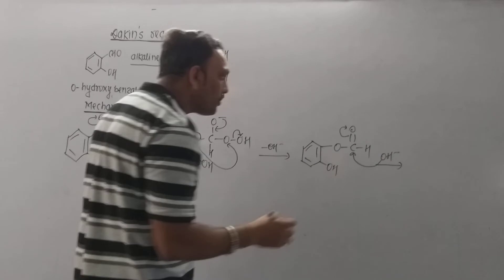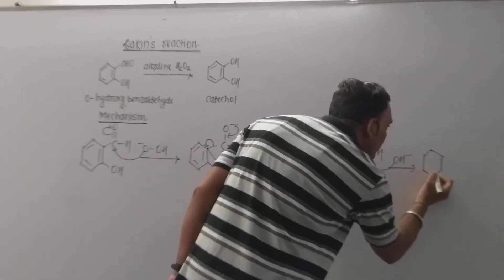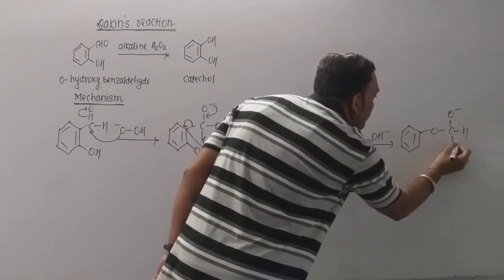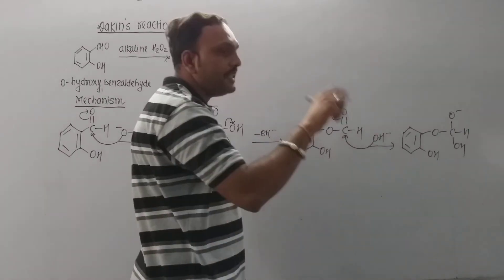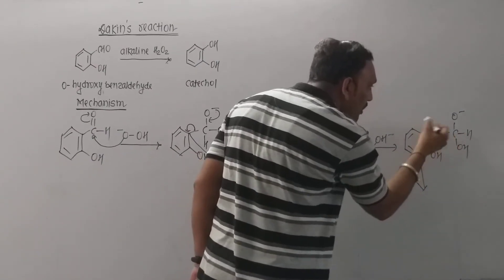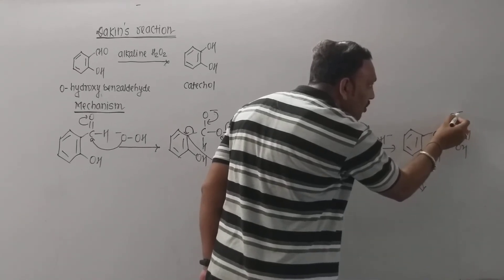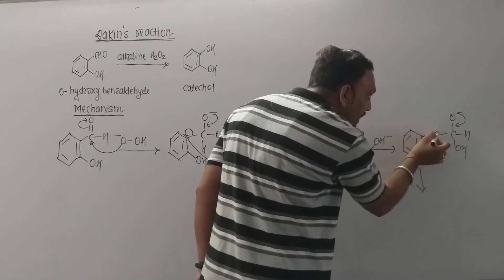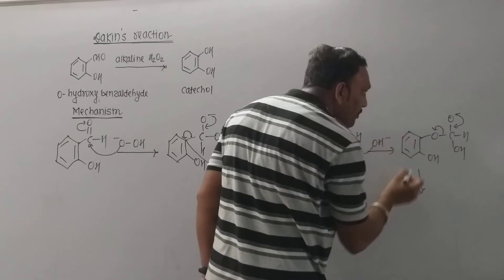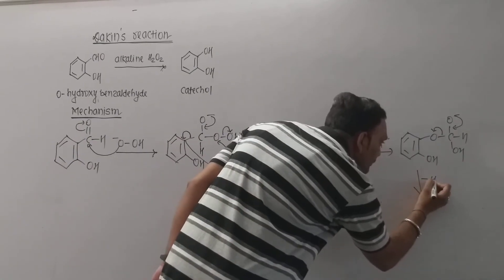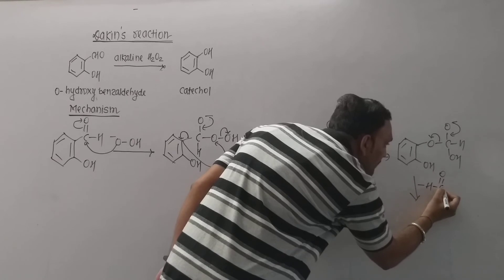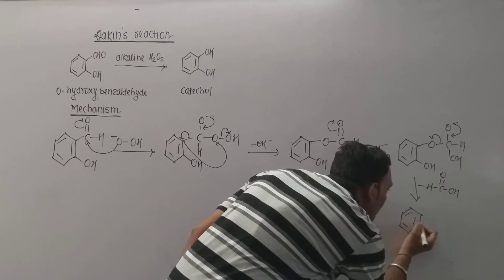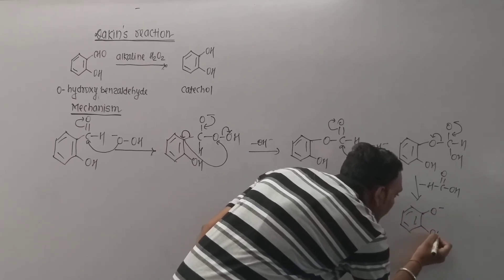Now at this point, departure of formic acid takes place in this manner. Now, have a look at this. Oxygen keeps electron, shares electron pair right here, and this oxygen being more electronegative than carbon keeps electron pair towards itself. Due to this, formic acid ultimately gets departed and that leads to the formation of the new intermediate what we call alkoxide ion.